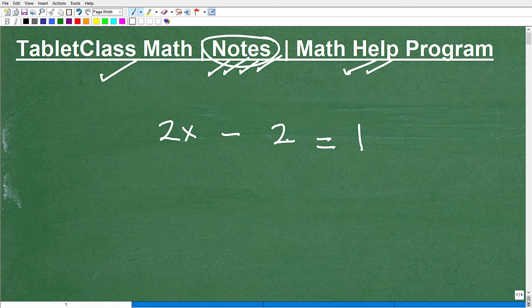So let's go ahead and just review how to handle something like this. First thing you want to do is to move all your numbers to this side of the equation and have all your variables on this side of the equation. So the way I'm going to do that is I'm going to add two to both sides of the equation like so,